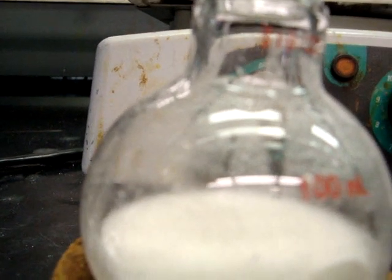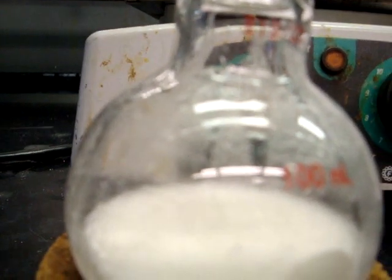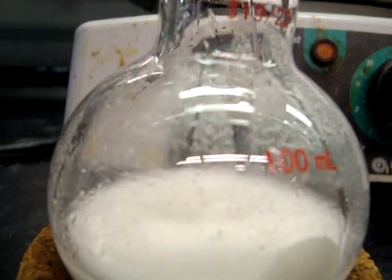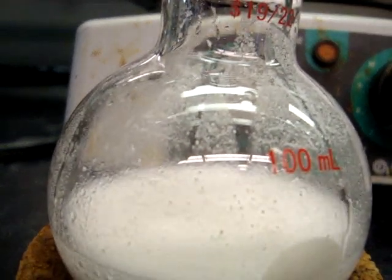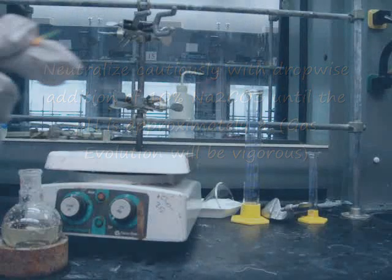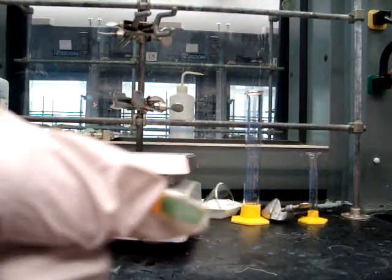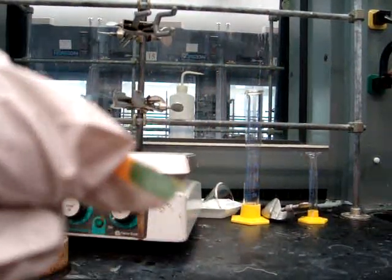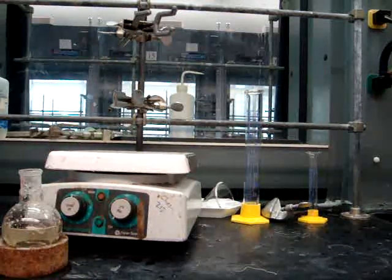You will add enough sodium bicarbonate so the pH of the solution is approximately 8. As you can see, when you add sodium bicarbonate, the reaction mixture will bubble. The pH paper will turn a greenish color when the pH is approximately 8 — this means you have added enough sodium bicarbonate.